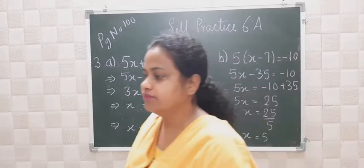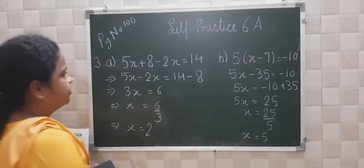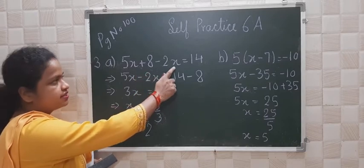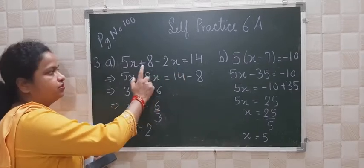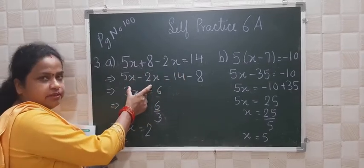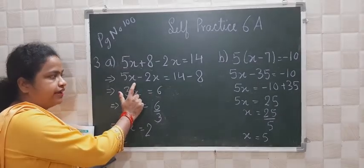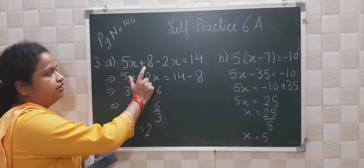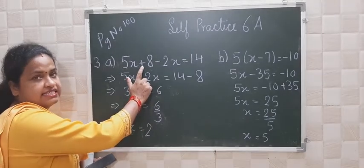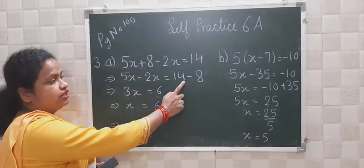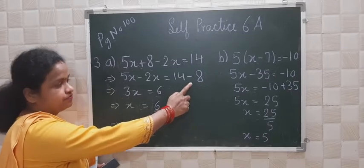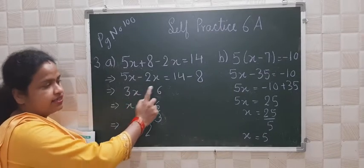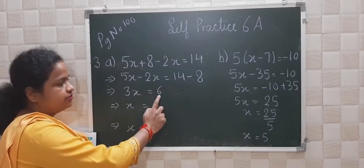Now, here what is given? 5x plus 8 minus 2x is equal to 14. So here we will bring the variable parts together. So 5x minus 2x — the 8 is changing side so it will become minus 8. So 5x minus 2x will be equal to 3x, and 14 minus 8 will be equal to 6.